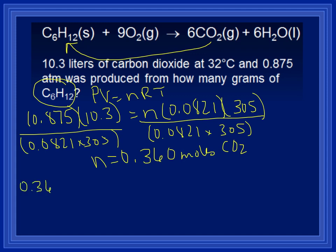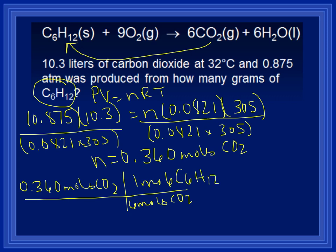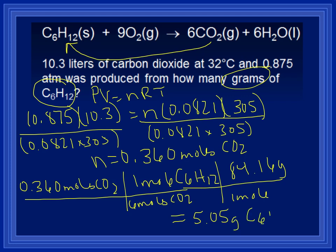We're going to take the 0.360 moles of CO2. Since we don't want CO2, the first thing we're going to do is convert away from it. Six moles of CO2 for every one mole of C6H12. We would stop there if our problem asked for moles, but it doesn't, it asks for grams. So we're going to do one more step and convert to grams, which means we need the molar mass of C6H12, which is 84.16 grams. So multiply and divide, and our final answer is 5.05 grams of C6H12.